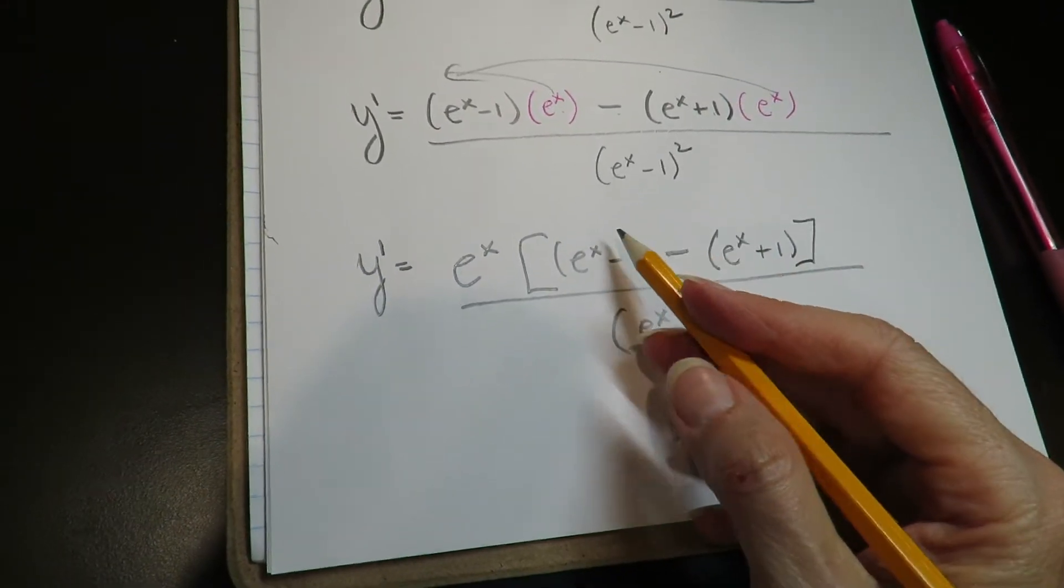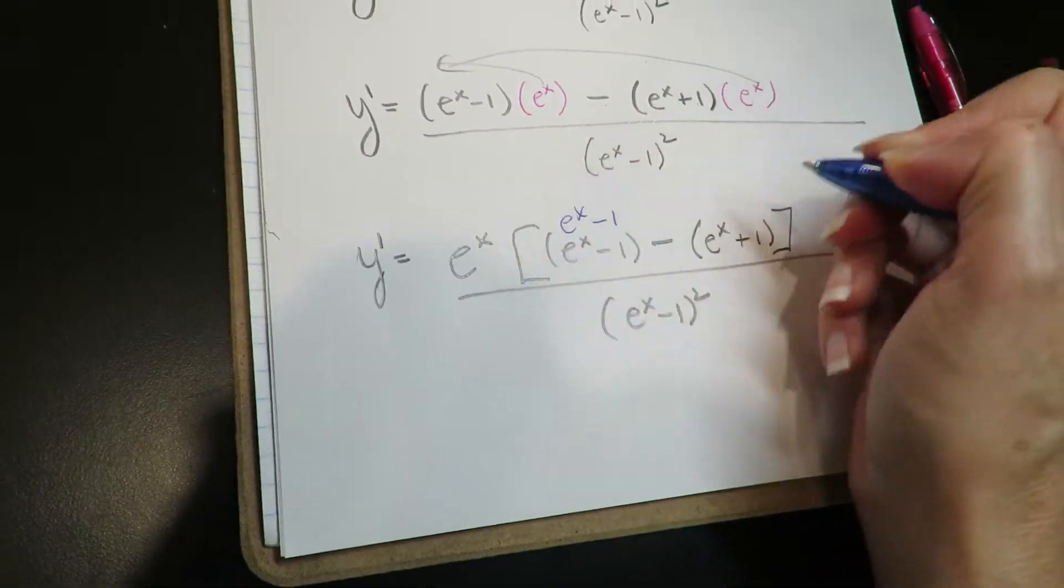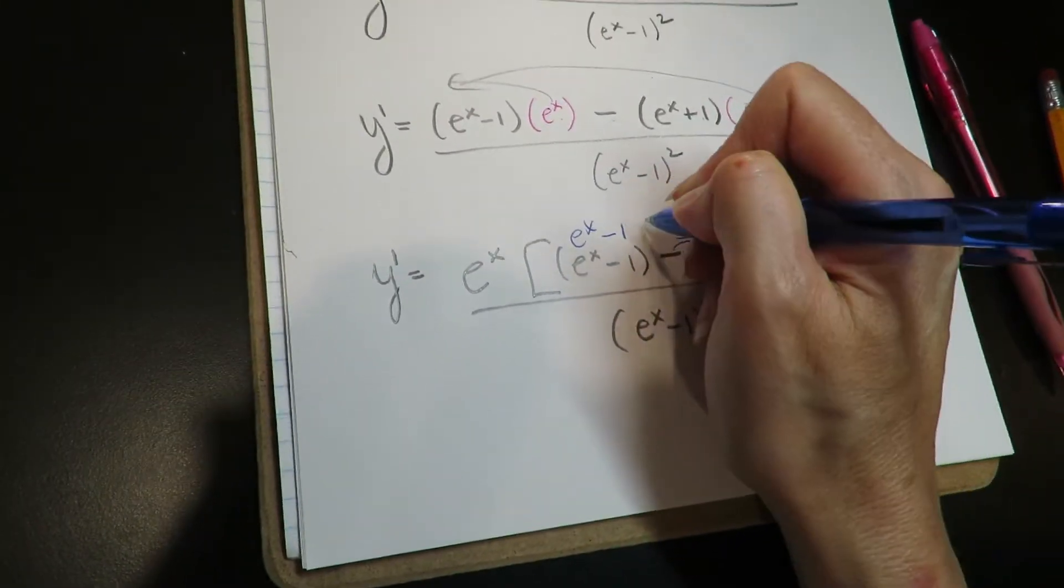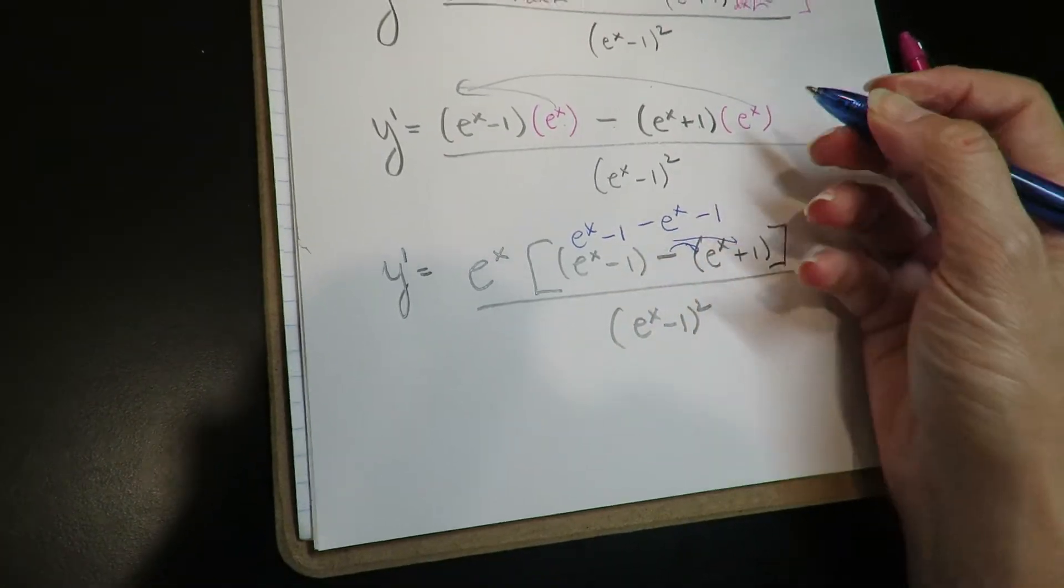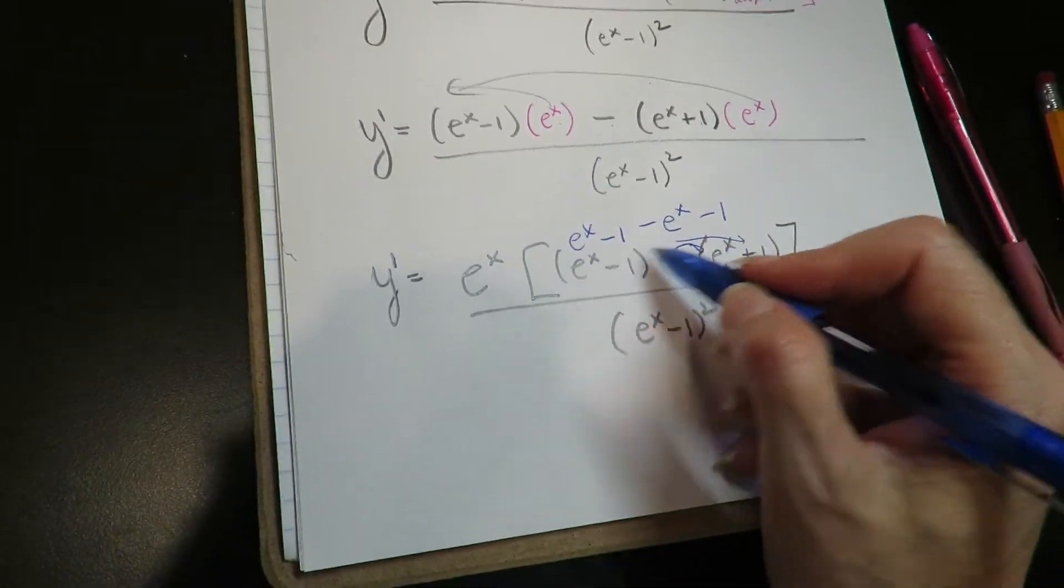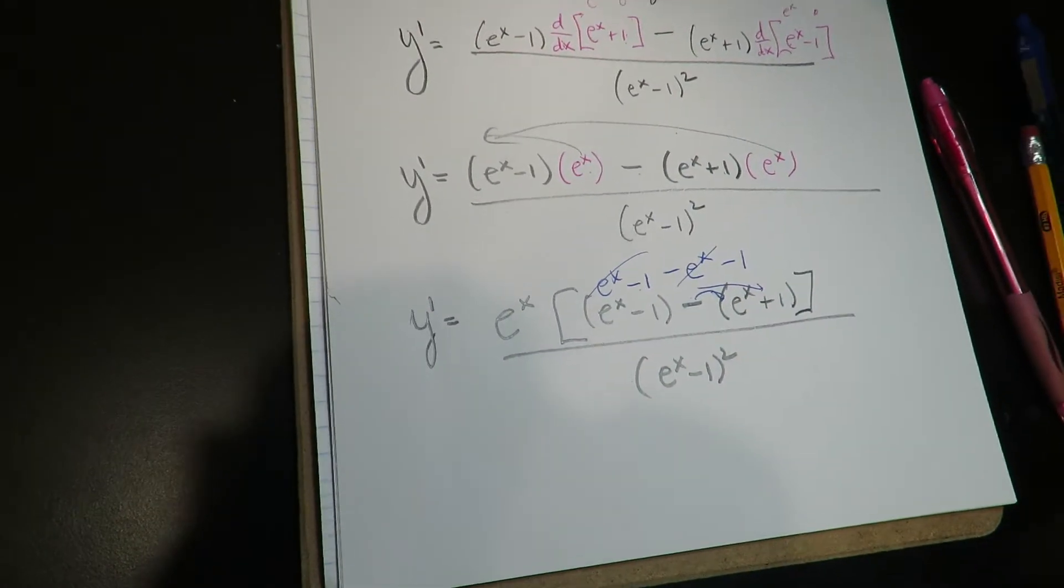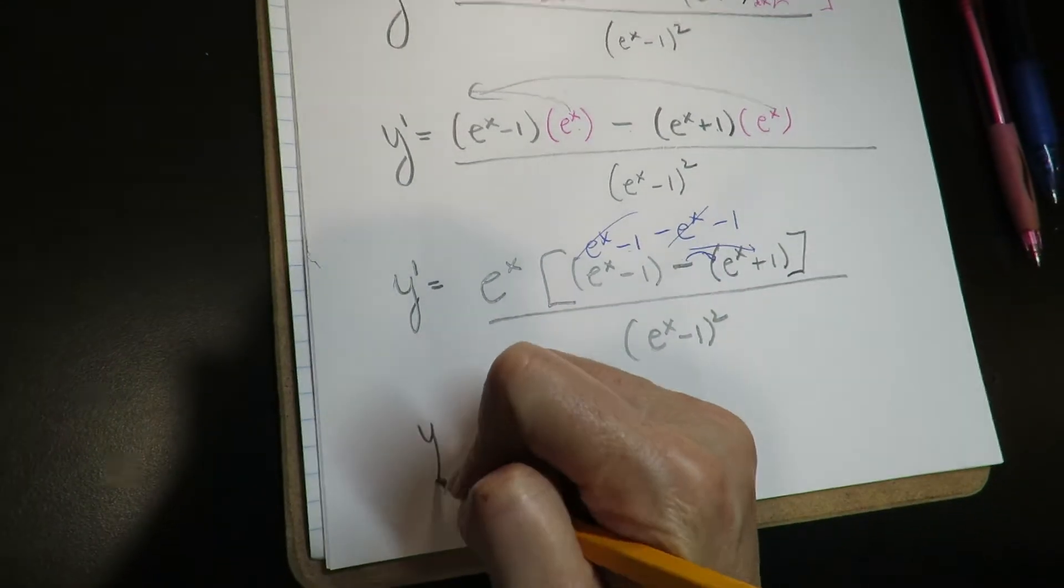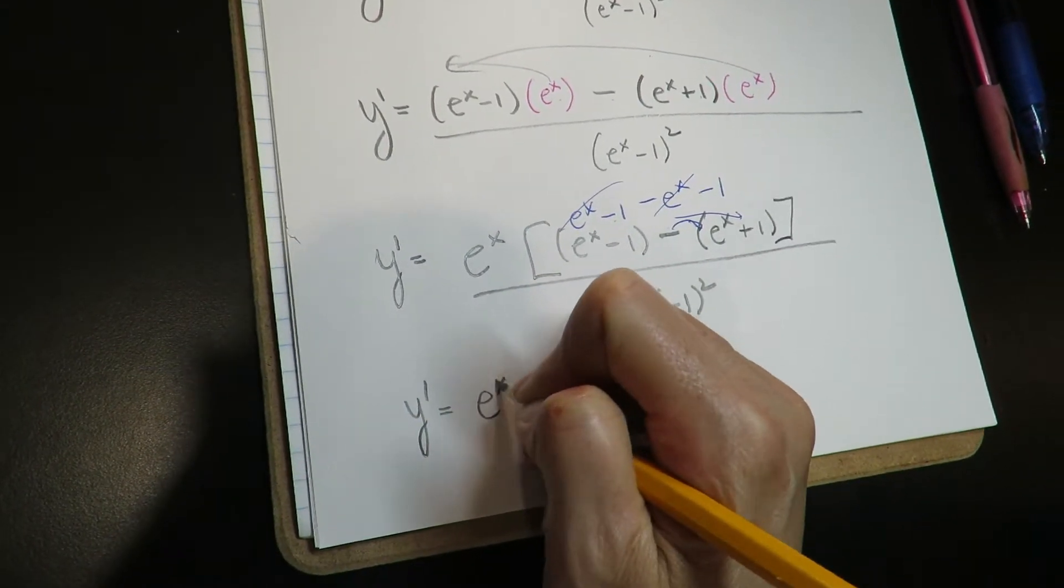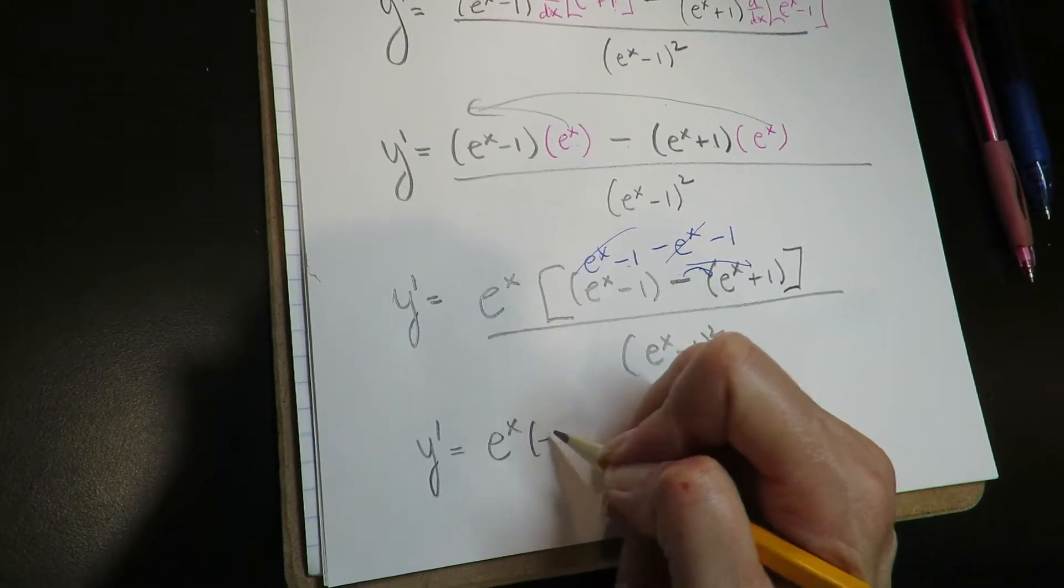Now I'm going to simplify what's in here. So I'm going to have e to the x minus 1, don't forget to distribute this negative, so it's minus e to the x minus 1. When you're simplifying this, this and this will cancel and you're left with a minus 2. So minus 1 plus a minus 1 is a minus 2.